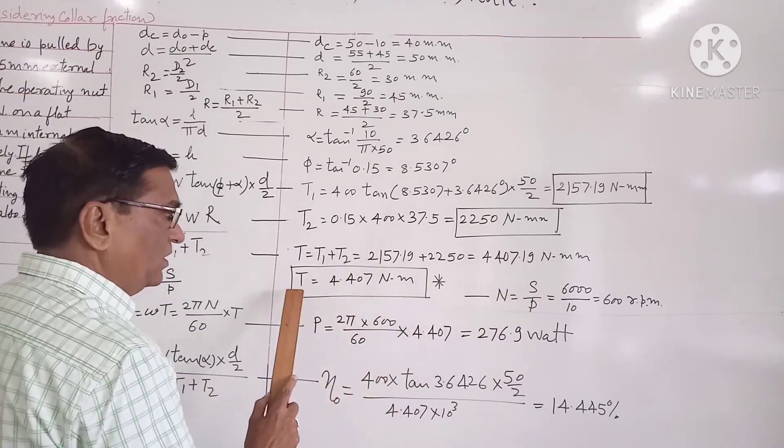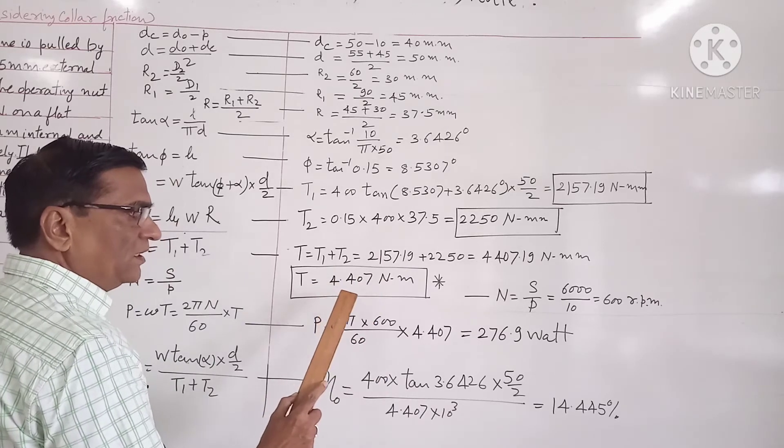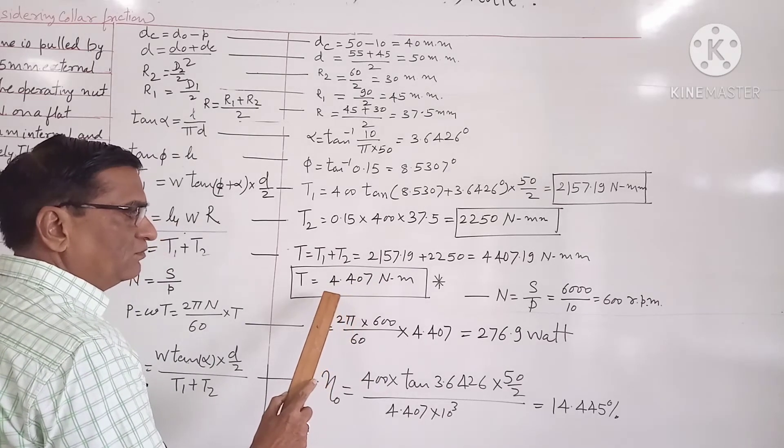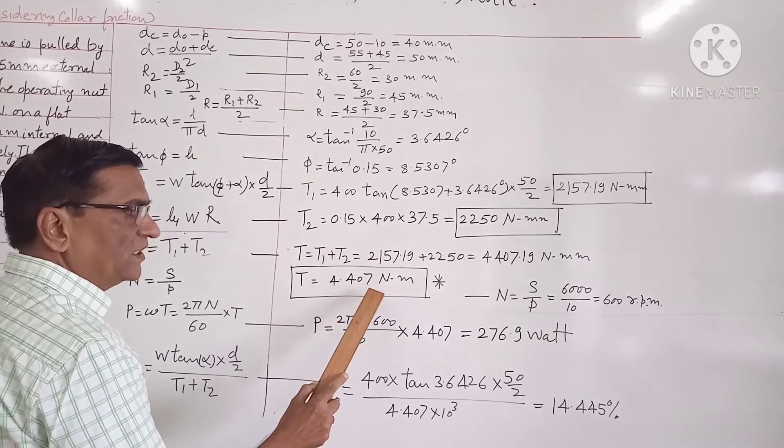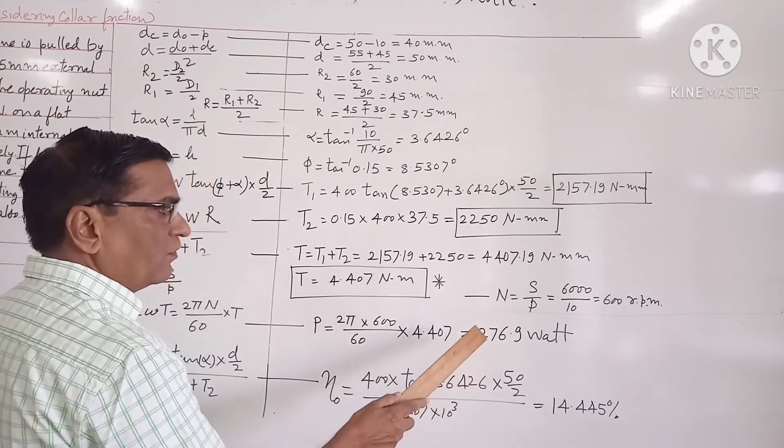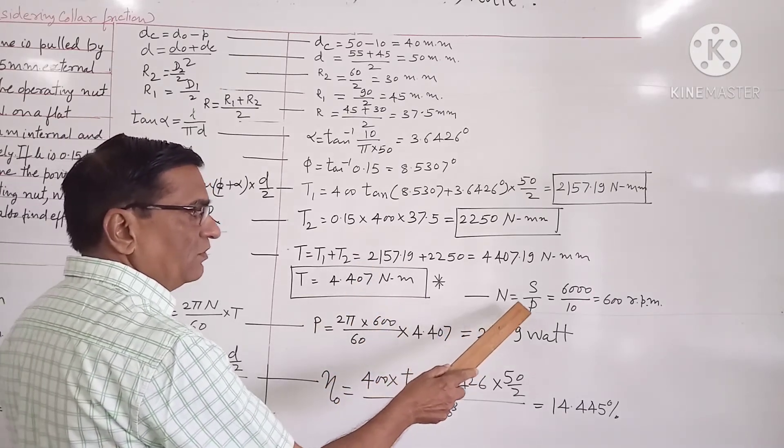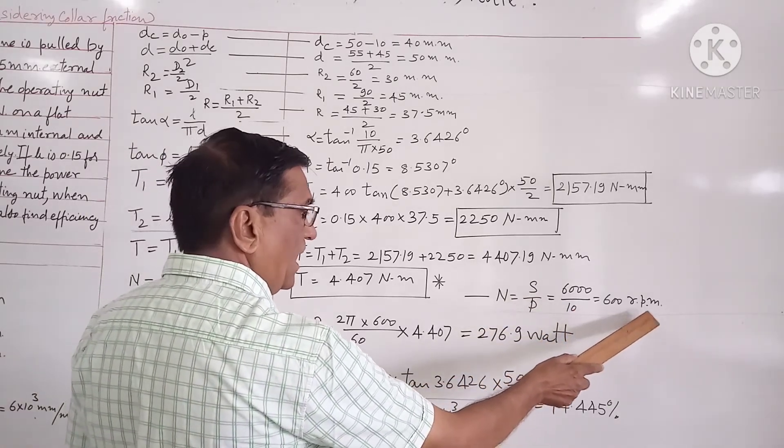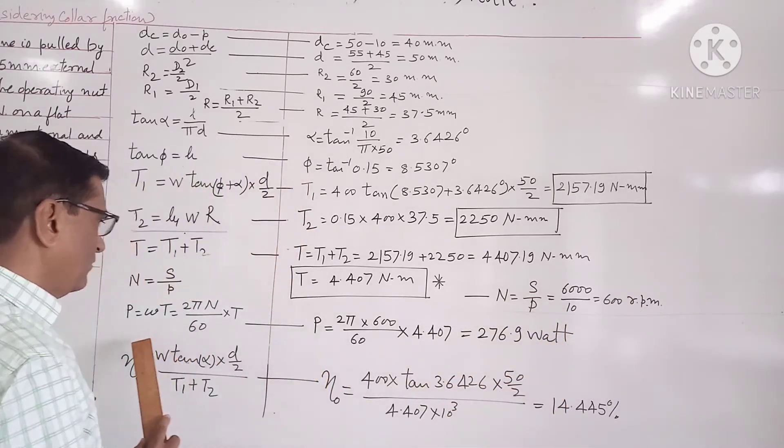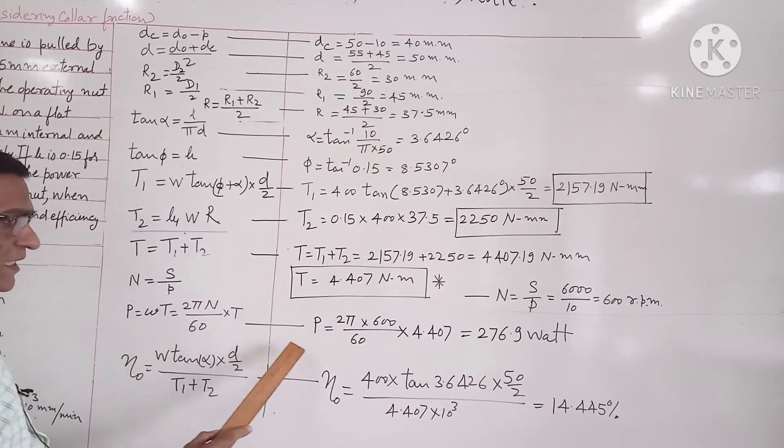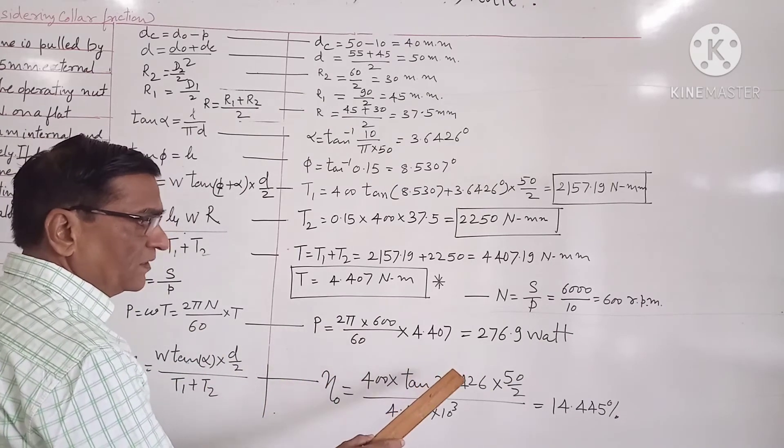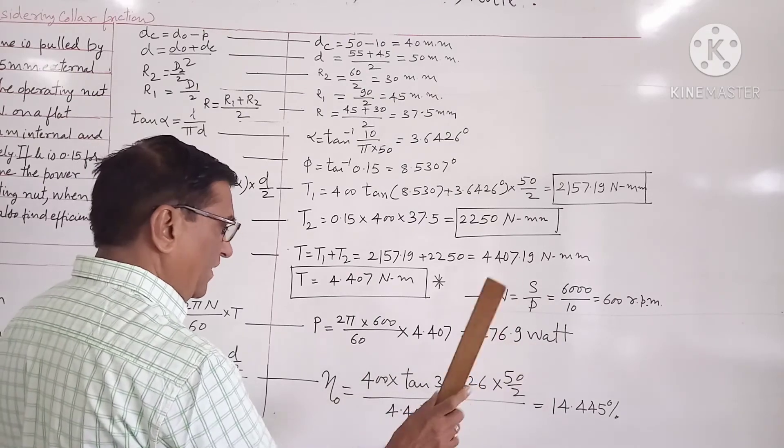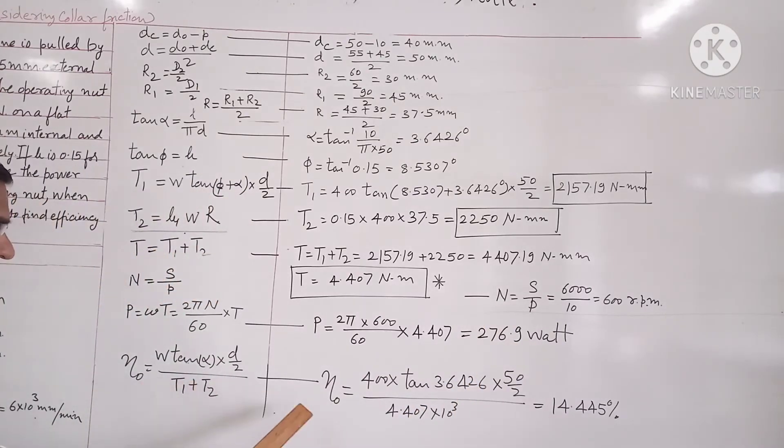So the total torque in newton meter comes out to be 4.407 newton meter. Now from the formula N is equal to S upon P, the RPM comes out to be 600 rpm. Now from the formula P is equal to omega T, the power comes out to be 276.9 watt.